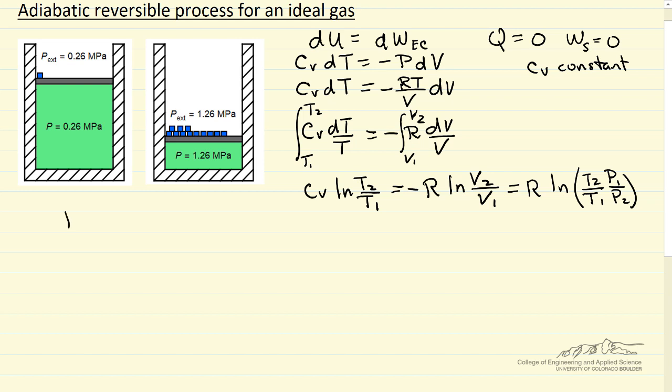So all I've done is take the ideal gas law, p2 v2 equals r t2, and replace v2 by r t2 over p2. Likewise, for v1, the r's cancel. I end up with this log term on the right side. But notice I can rewrite that. I have a log of products. I can write this as a sum of logs. And important I don't leave out this minus sign. So minus r log t2 over t1, minus r log p1 over p2.